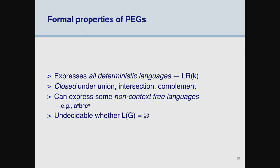For those interested in mathematical properties: PEGs express everything that's in LR(k), they're compositional and close under union, intersection, and complement, and they can express some context-sensitive languages. For example, the language of n-a's followed by n-b's followed by n-c's cannot be recognized with a standard context-free grammar, but apparently can be done with PEGs. Also, decidability: just from the specification of a language you cannot know whether the specification has any strings in it at all — so that's undecidable.